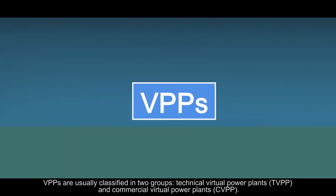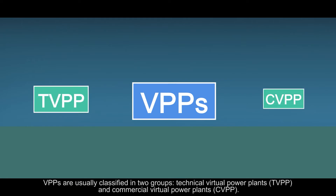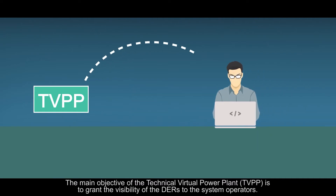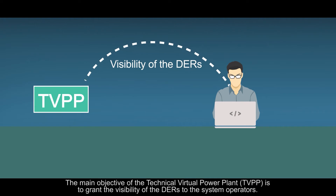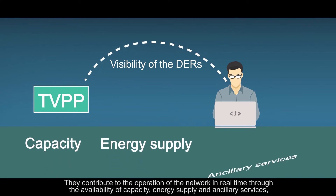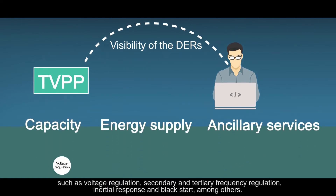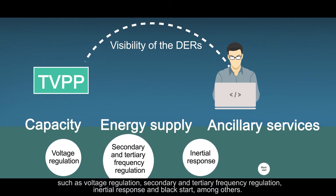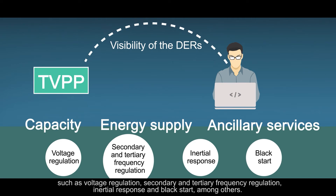Virtual power plants are usually classified in two groups: technical virtual power plants and commercial virtual power plants. The main objective of the technical virtual power plant is to grant the visibility of the distributed energy resources to the system operators. They contribute to the operation of the network in real time through the availability of capacity, energy supply and ancillary services, such as voltage regulation, secondary and tertiary frequency regulation, inertial response and black start, among others.